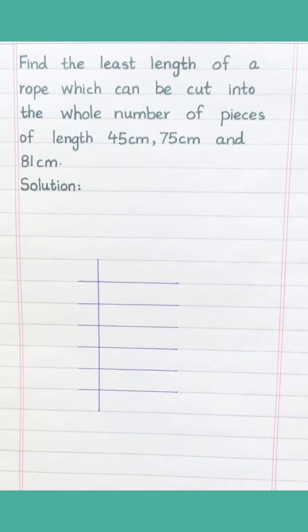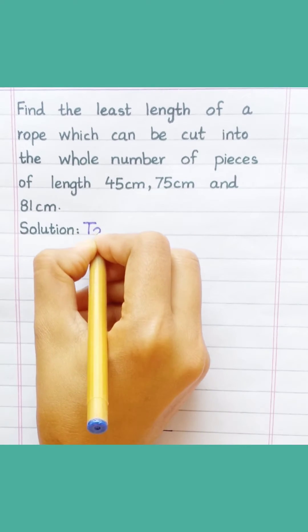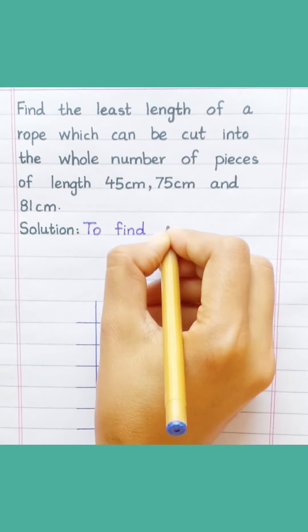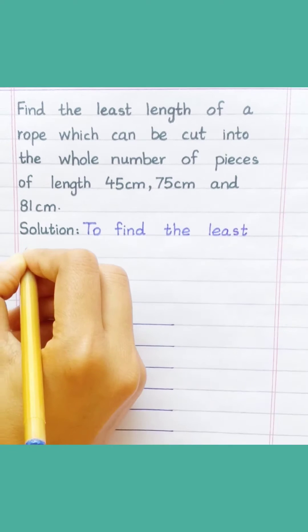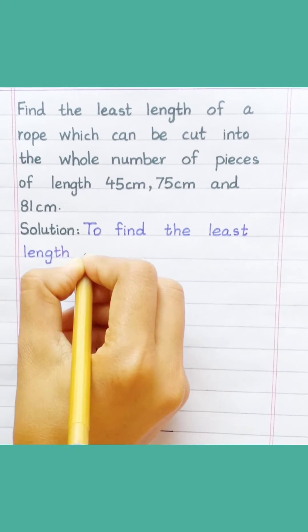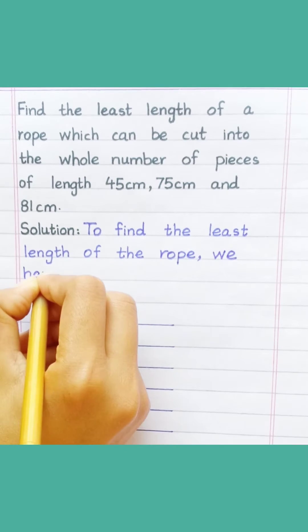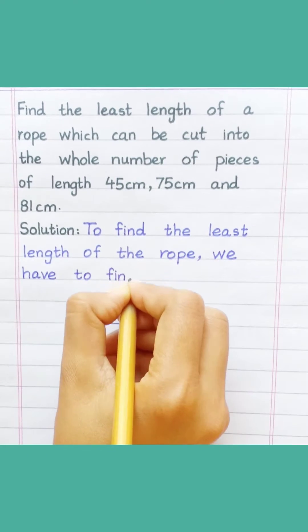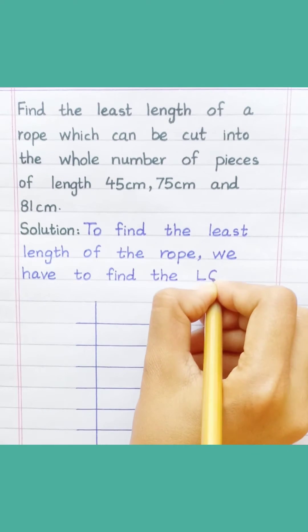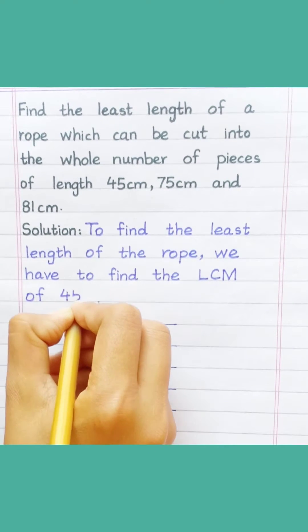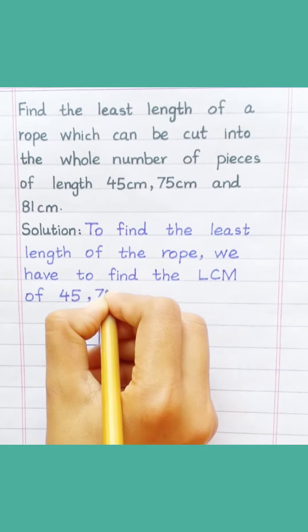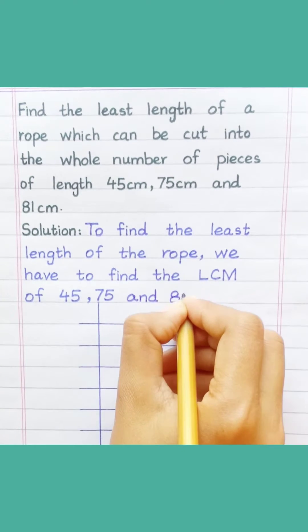Find the least length of a rope which can be cut into the whole number of pieces of length 45 cm, 75 cm, and 81 cm. To find the least length of the rope, we have to find the LCM of 45, 75, and 81 cm.